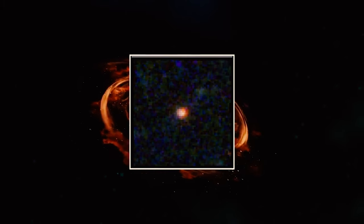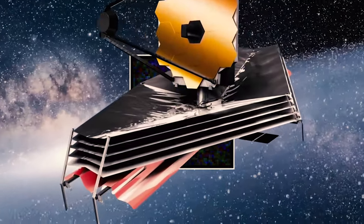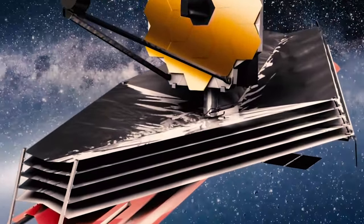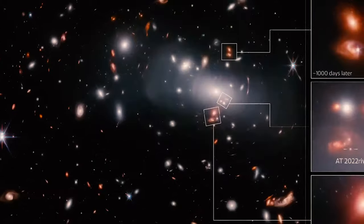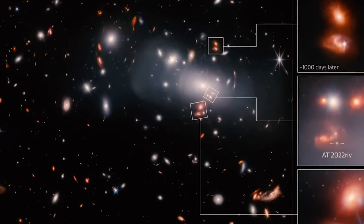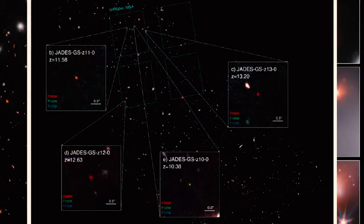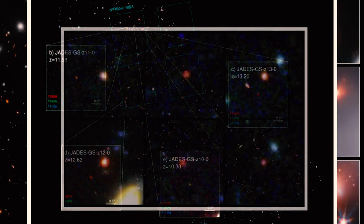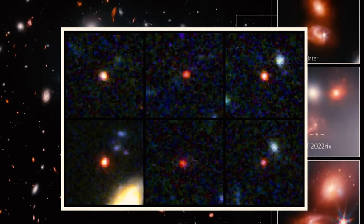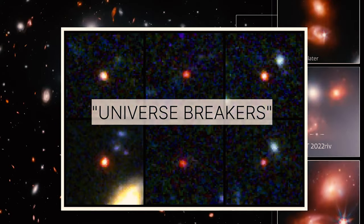The shocking discoveries of the James Webb Telescope have created a stir in the field of astronomy. Among all the discoveries made by the Webb Telescope so far, the most surprising discoveries are from the early universe. We've already seen how these early galaxies display completely different properties than scientists expected. Because of this, scientists named them universe breakers.